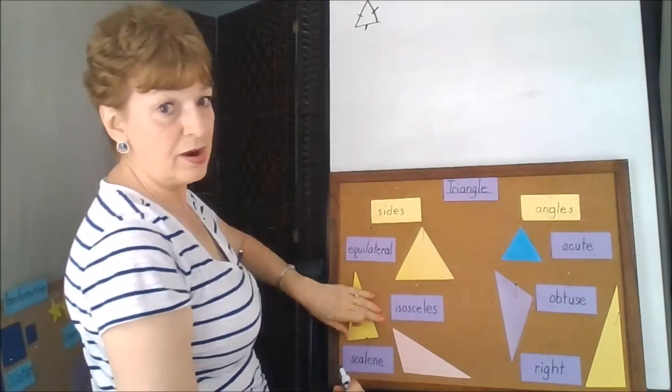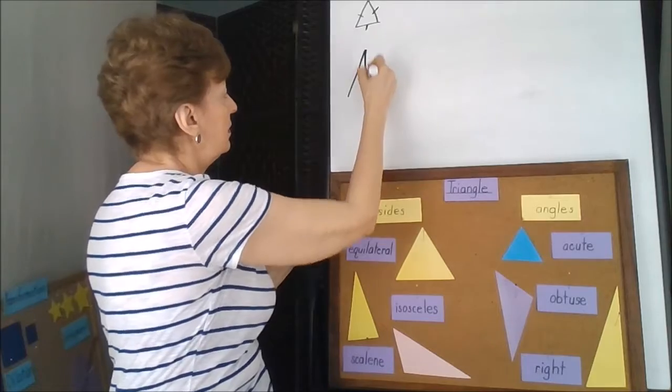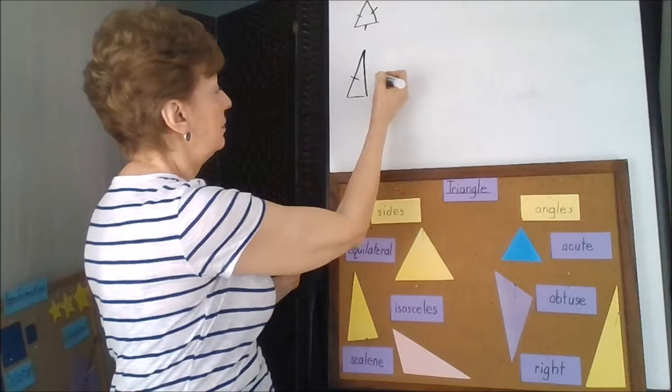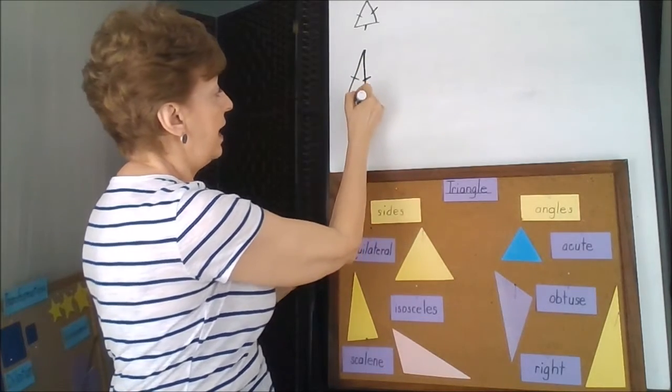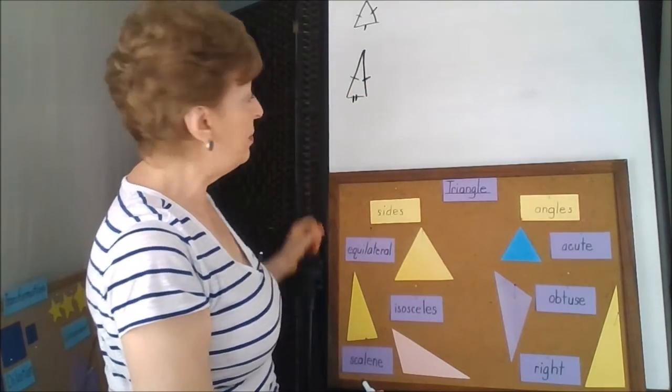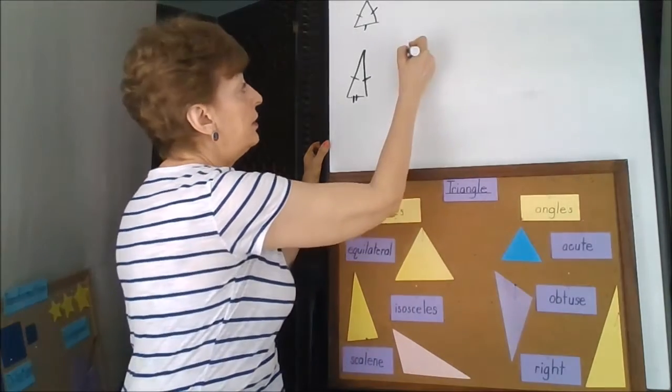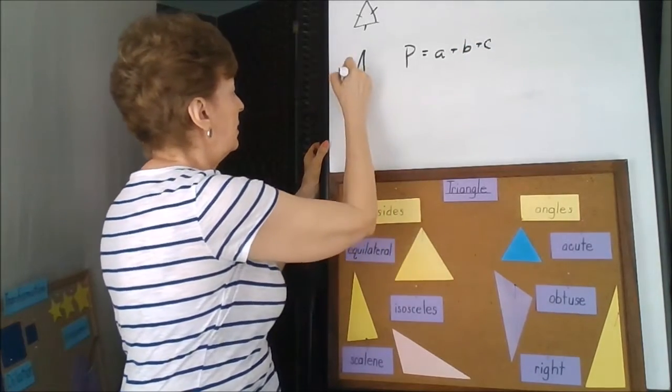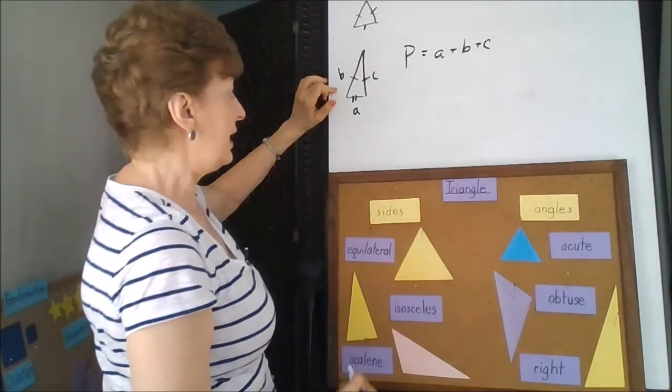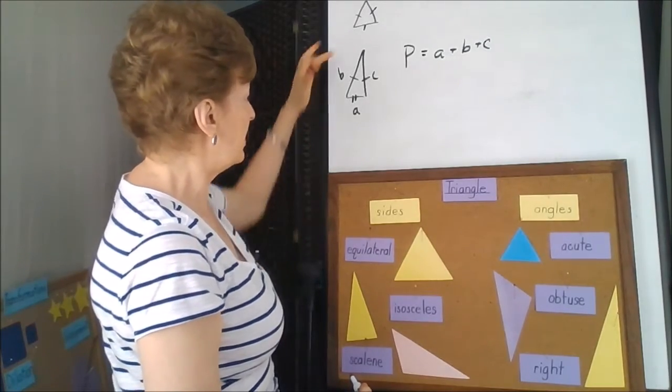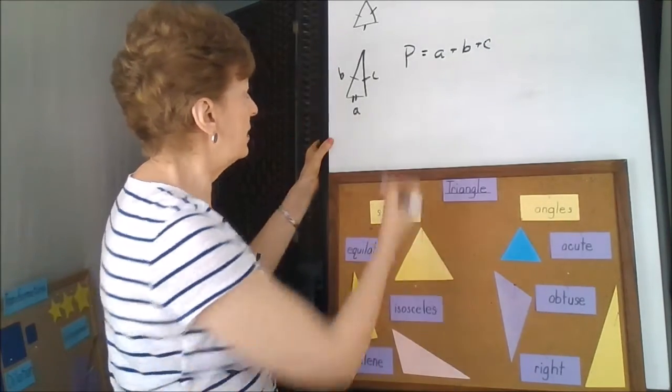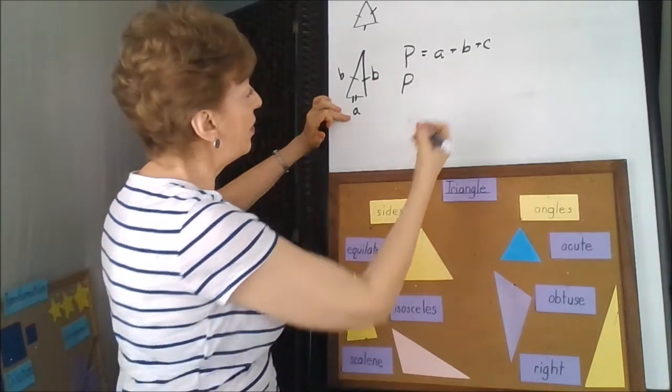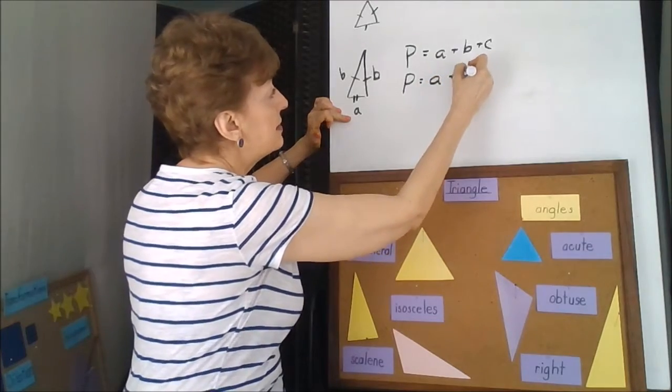The isosceles triangle has two sides that are the same. And obviously that one is different. So a perimeter on this one, you could use your all-purpose A plus B plus C. But B and C are the same amount. They're congruent. So we could give it the same letter. Perimeter, and now our formula would be A plus 2B.